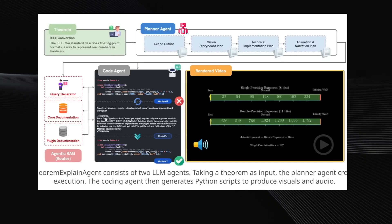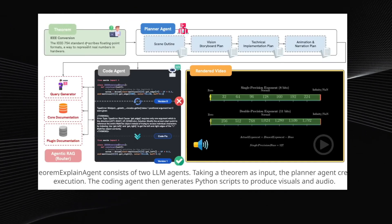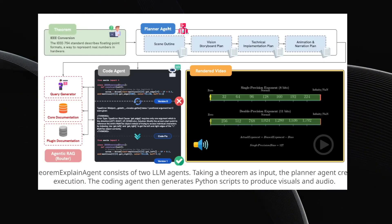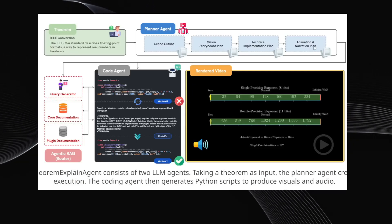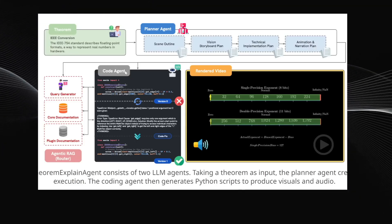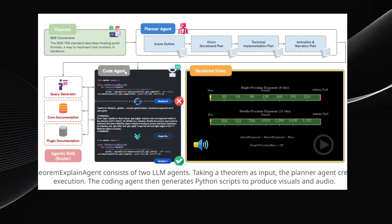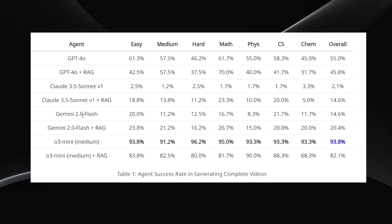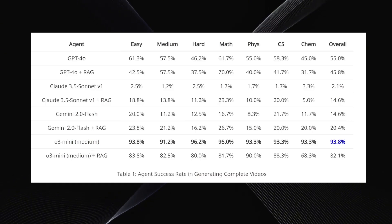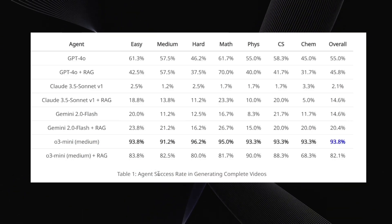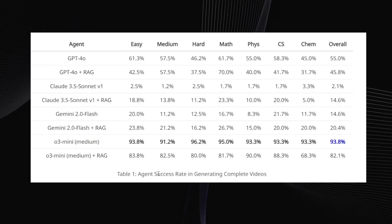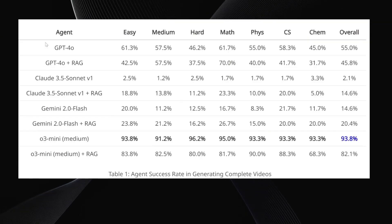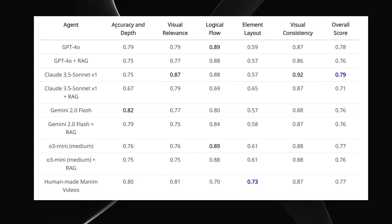Now let's break down how it works. Its architecture consists of two agents. First, you input the theorem or concept you want explained. This goes to the planner agent, which creates a plan for the video, including the script, storyboard, and visuals. Then, this plan is passed to the code agent, which generates the code to actually create the video. It uses a tool called Manim to help create these visualizations. This is just an agent framework, meaning you can plug in different AI models. They tested a bunch, including GPT-4o, Claude 3.5, Gemini Pro, and O3 Mini. In terms of successfully generating a complete video, O3 Mini came out on top, succeeding over 90% of the time. The performance of the other models was significantly lower, mostly under 50%.